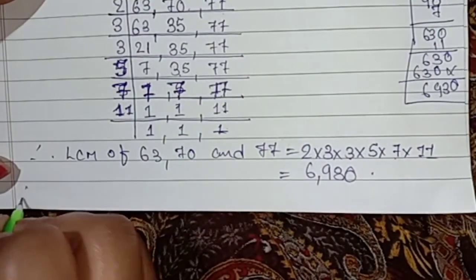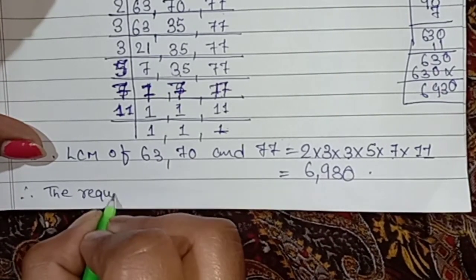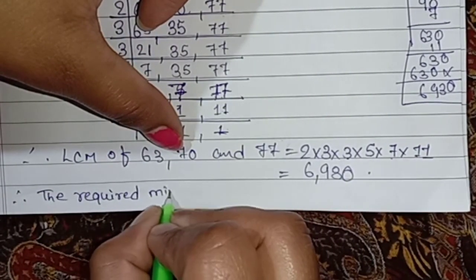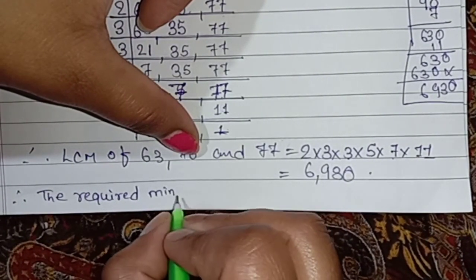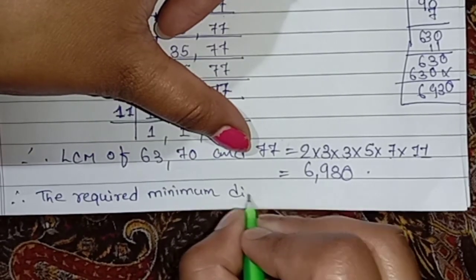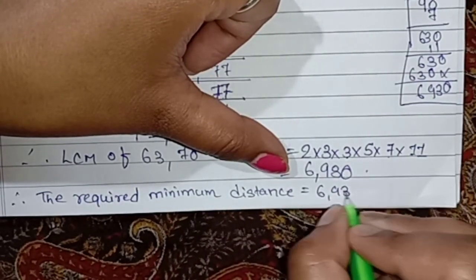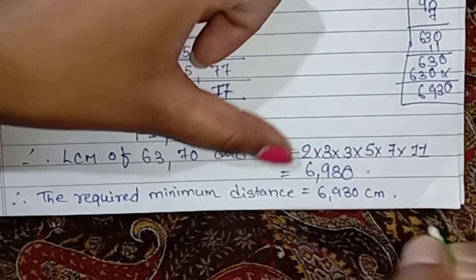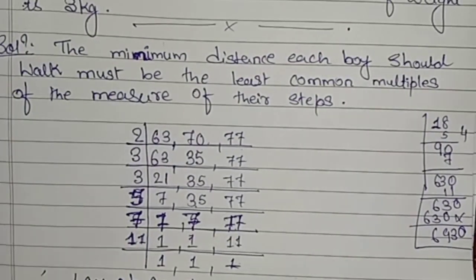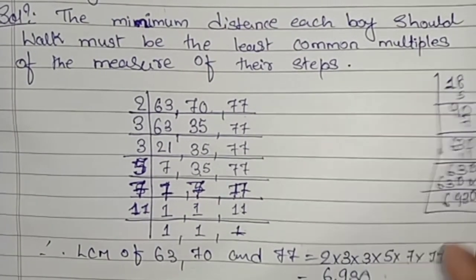Therefore, the required minimum distance is equal to 6,930 centimeters. This is your solution number two. I hope children, all of you understand. If there is any doubt you can ask.